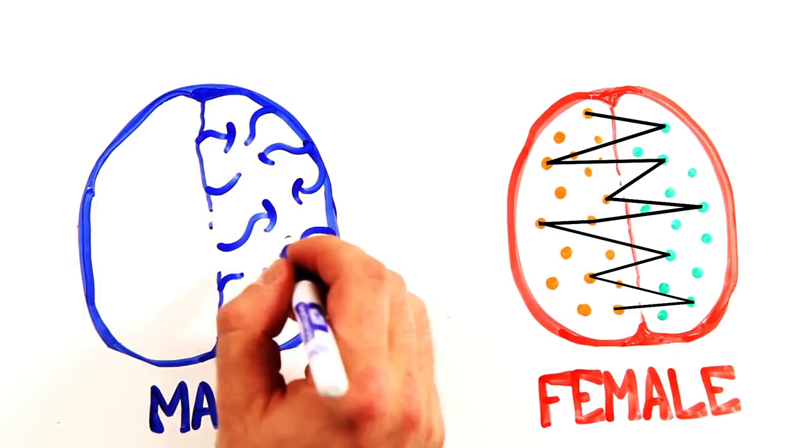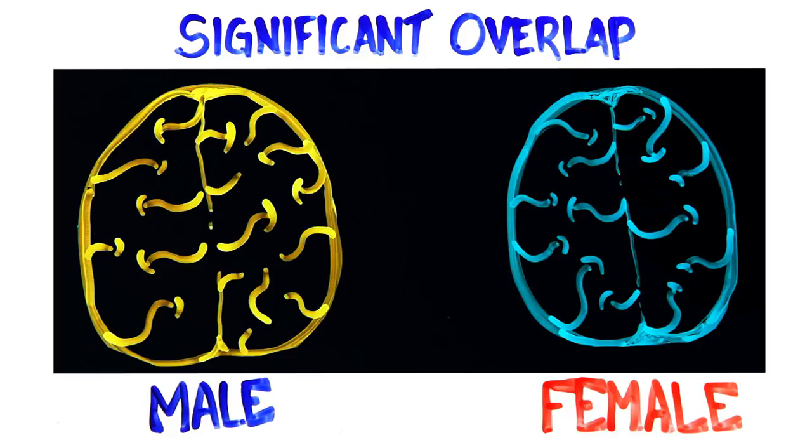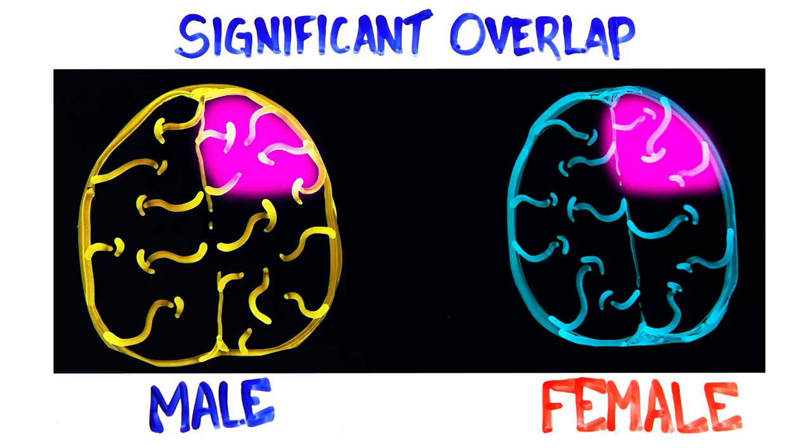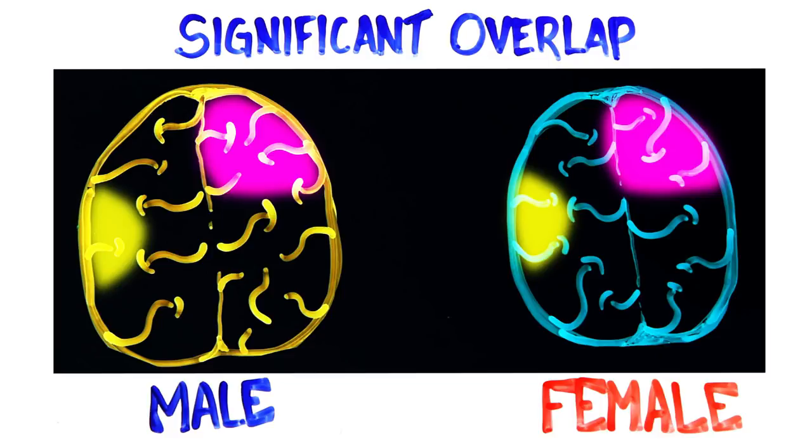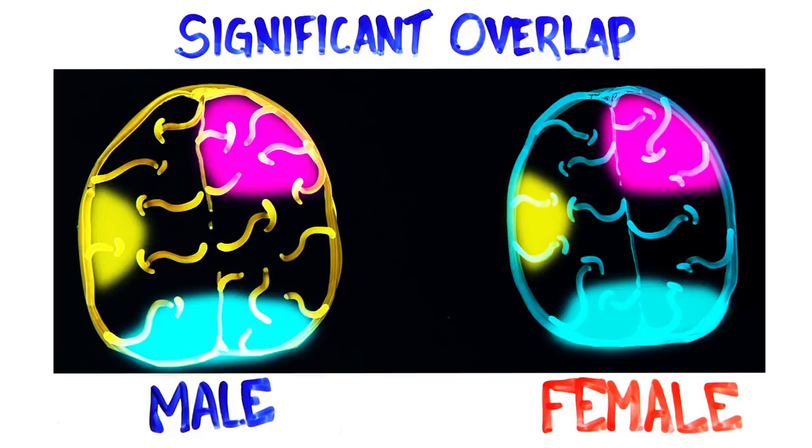But overall, MRI brain imaging shows significant overlap in the physical structure between the sexes. After studying 1,400 brains and comparing the sexes, researchers found that mostly all men and women show a mosaic of female and male-typical structures in the brain.